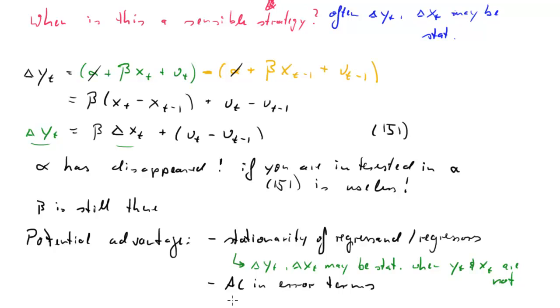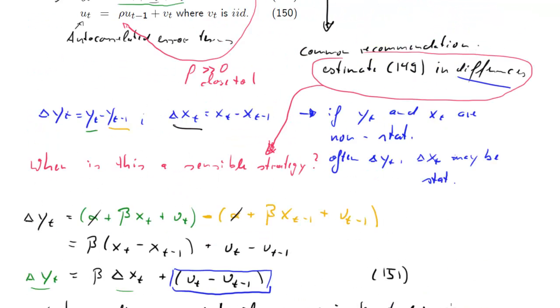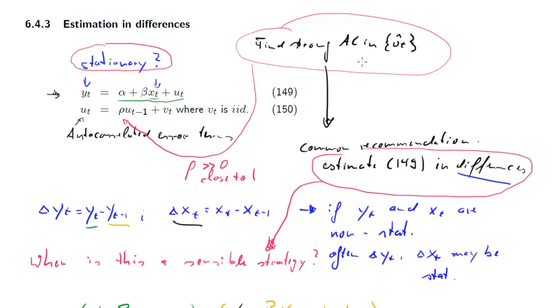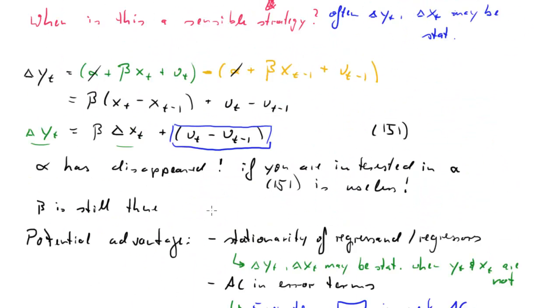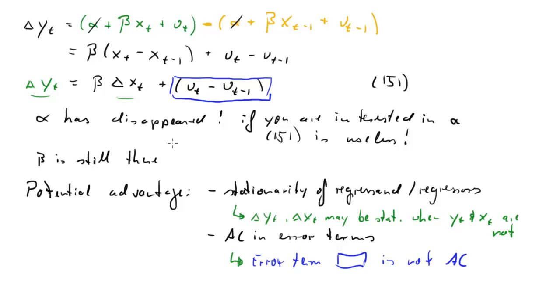The second case is where the new error term here, so the error term in the blue box, is not autocorrelated. So if we want to address the second issue in this regression, the fact that we find strong correlation in the error terms, well, if this is the point we want to address then this is useful if that new error term ut minus ut minus 1 is not autocorrelated. So we're going to look at this new error term now.